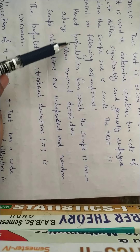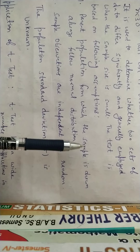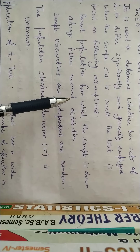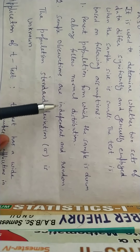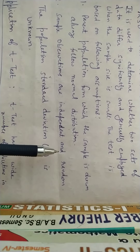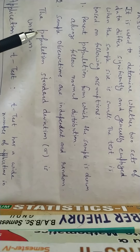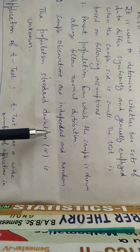The first assumption is that the parent population from which the sample is drawn should always follow normal distribution — meaning the population should be normally distributed. The second assumption is that the sample observations are independent and random. The third assumption is that the population standard deviation sigma is unknown.